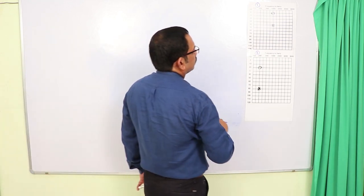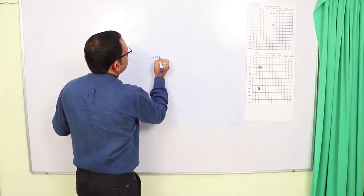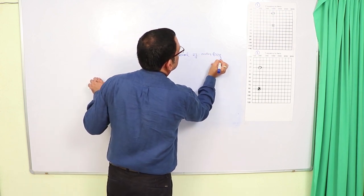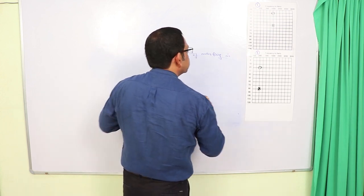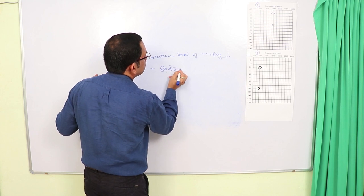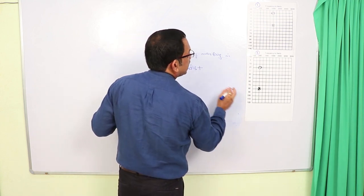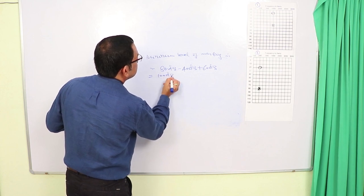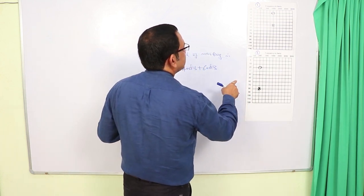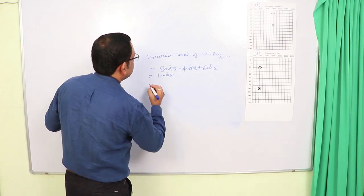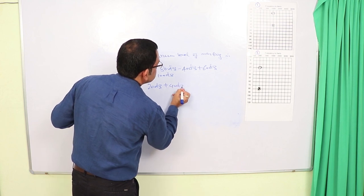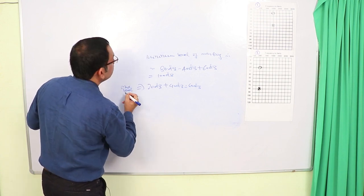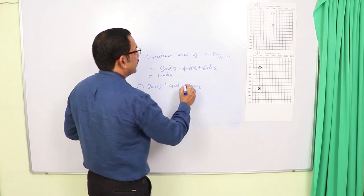Now let us consider the second audiogram. In the second audiogram, the minimum level of masking is: threshold in the test ear, that is 80 dB, minus IA that is 40 dB, plus AB gap in the non-test ear that comes out to be 60 dB. So the minimum level of masking is 100 dB. And the maximum level of masking is BC threshold in the test ear, that is 20 dB, plus 40 dB — that is 60 dB. In this case, the minimum level of masking is greater than the maximum level of masking.